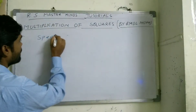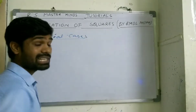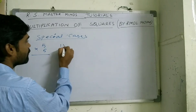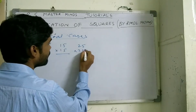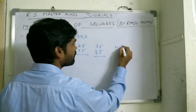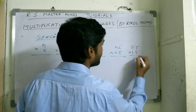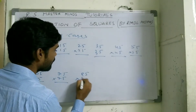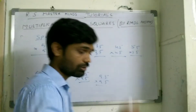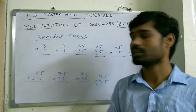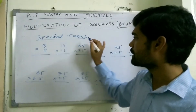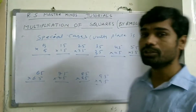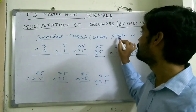Now let's look at some special cases. These are very easy and interesting. Consider numbers whose units place is 5: 5×5, 15×15, 25×25, 35×35, 45×45, 55×55, 65×65, 75×75, 85×85, 95×95, and so on. You can find the answer in just 2 seconds with no multiplication needed. The special case applies whenever the units digit is 5.